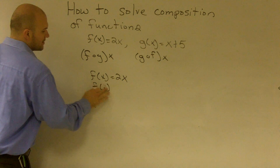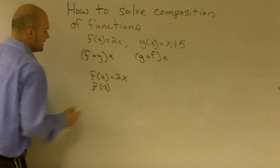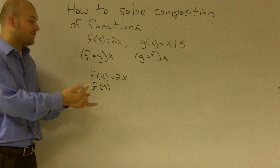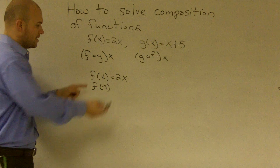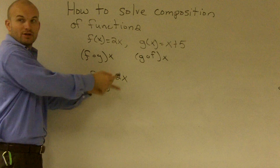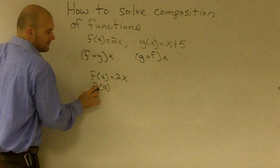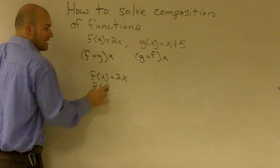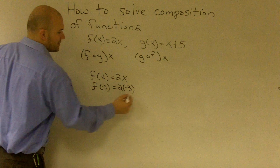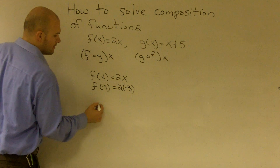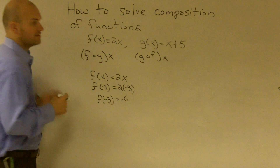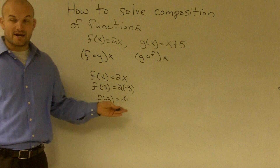Let's find f of negative 3. Remember that x is your input and the function gives you an output value. Whatever you plug in for x, that's what you plug into your function. So negative 3 goes in for x, giving us 2 times negative 3. So f of negative 3 equals negative 6, and that is your output.